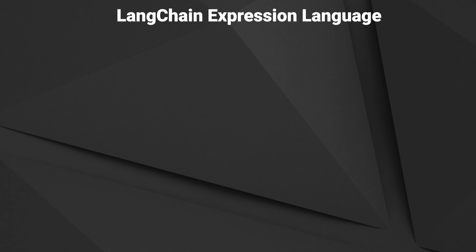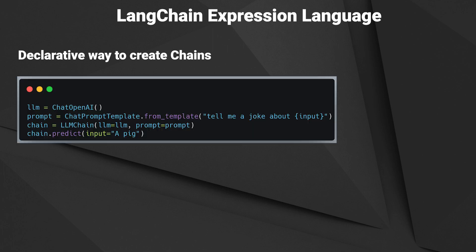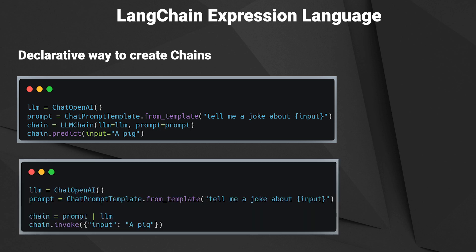Today I want to show you the new LangChain Expression Language. The LangChain Expression Language is a new declarative way to create chains. So instead of creating objects and passing them around as arguments, you can use the pipe operator to compose chains together. I will walk you through some examples and give you my two cents about this new topic. You will find the link to the code in the description.